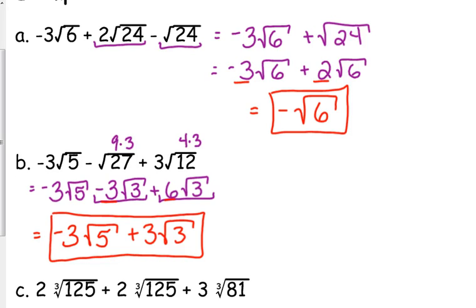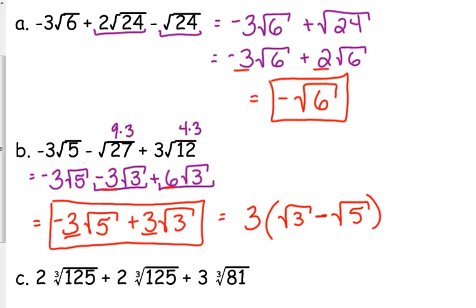Now, if you really want to, you could factor out that 3 from the front. You may see it written like this, if it's like in a book or something like that. If it's on an answer key, it may show up like this. Probably not, but it might. I just factored out the coefficients, and then since the square root of 5 was negative, they save space by changing the order. So, it's the square root of 3 minus the square root of 5. But, I'm fine with what I have boxed there. I'm good with that being a final answer.